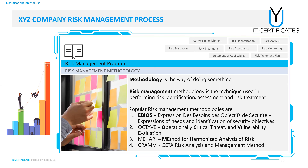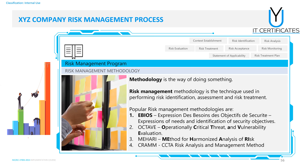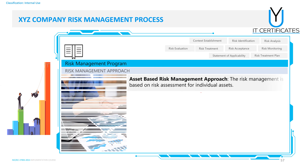You must define a risk management methodology — the method of how to do risk management. There are many methods: EBIOS, OCTAVE, MEHARI, CRAMM, and others. Each has a training course of three or four days. Some are European methods, some from the United States. You choose one to implement risk management in your organization.